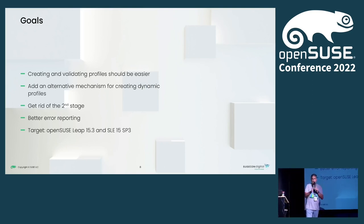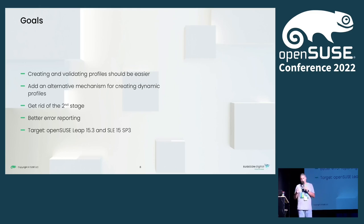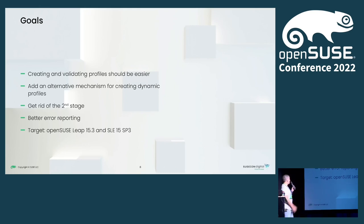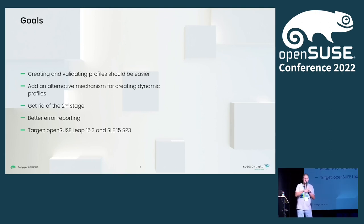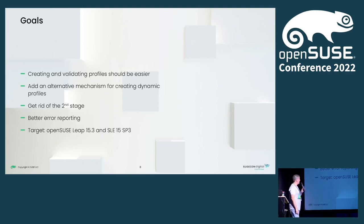In Jazz, that distinction does not exist anymore — everything happens in the first stage. But AutoJazz keeps the second stage, and we wanted to get rid of that. Spoiler: it didn't work, so we will explain what we did later. We also wanted to have better error reporting, which is something we started when we rewrote the storage stack — we started grouping errors in just one screen. So those were the goals.